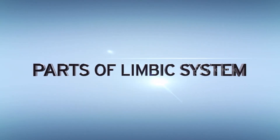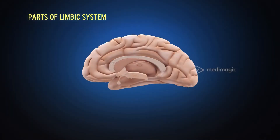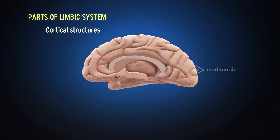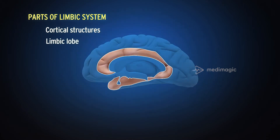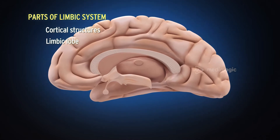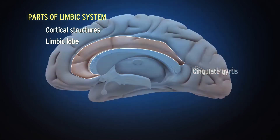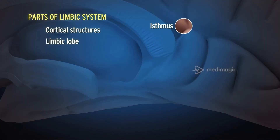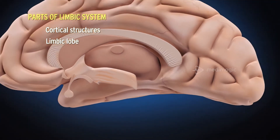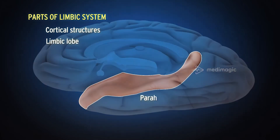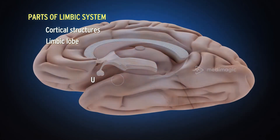The limbic system includes a number of structures from different parts of the brain. Broadly, it includes cortical and subcortical structures. The cortical structures include the limbic lobe, which consists of the cingulate gyrus, isthmus, parahippocampal gyrus, and uncus.